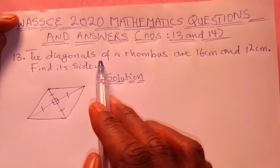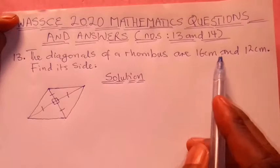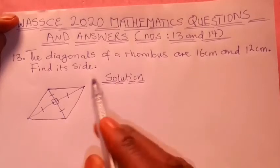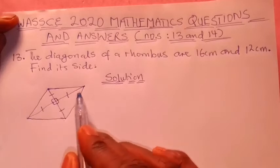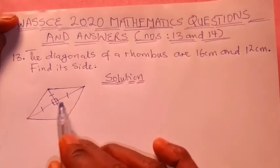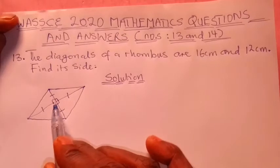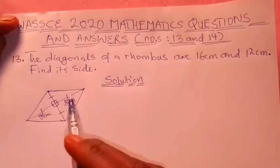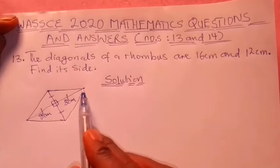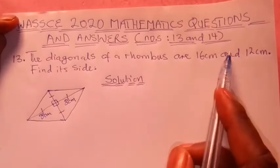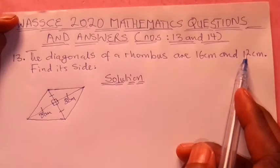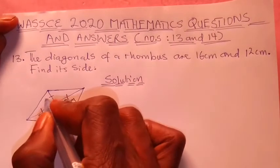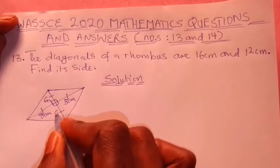The question says the diagonals are 16 cm and 12 cm. The first diagonal is the longer one at 16 cm. Since the diagonals bisect each other, each half of the 16 cm diagonal is 8 cm, and the two halves sum to 16 cm. The other diagonal is 12 cm, so each bisected half is 6 cm.